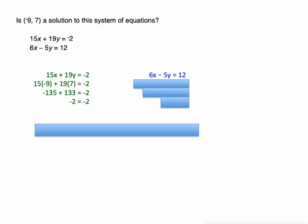6x - 5y = 12. Replacing x with -9 and y with 7, multiplying: 6 times -9 is -54, and -5 times 7 is -35. But when we subtract 35 from -54, we don't get 12.